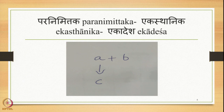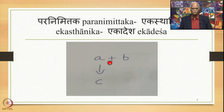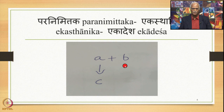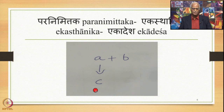Paranimittaka Ekadesha is explained as follows: A plus B in the Samhita mode — B is Par, A is Purva. In the environment of B, which is Par, A is substituted by C. This is Paranimittaka Ekasthanika Ekadesha. So A plus B is the input and C plus B is the output.